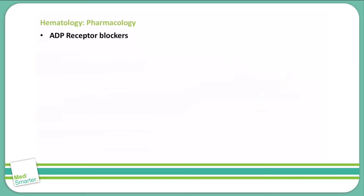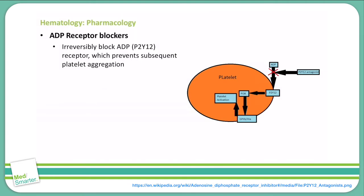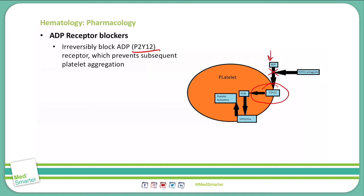Let's discuss the ADP receptor blockers. ADP receptor blockers irreversibly block ADP from binding to the P2Y12 receptor, which will prevent subsequent platelet aggregation. The P2Y12 G-coupled receptor is activated when ADP binds to it, causing an inhibition of adenyl cyclase, therefore decreasing intracellular levels of cyclic AMP.